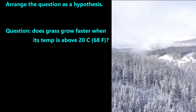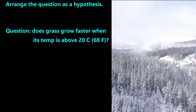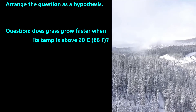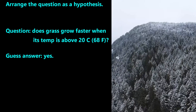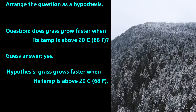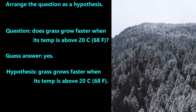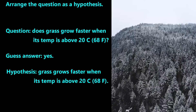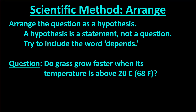To arrange the question as a hypothesis, we make a guess as to what the correct answer is, then state that answer. Based on our experience, we might guess that plants only grow when their temperature is above freezing, which is 0 degrees Celsius. So our hypothesis for this experiment is: grass grows faster when its temperature is above 20 degrees Celsius. It is entirely fine if we guess wrong. The important thing is to have a hypothesis so that we can design the study properly. When we are first learning how to design studies and graph the results, it helps to put the word 'depends' in our hypothesis.